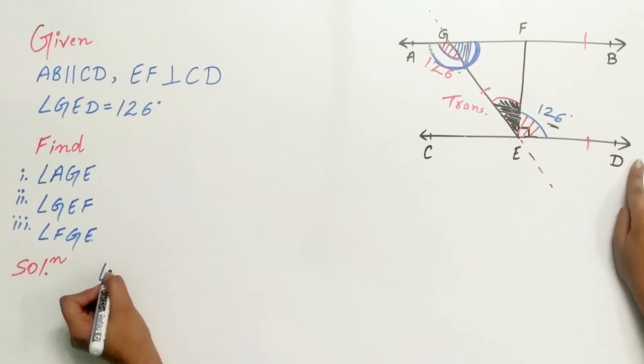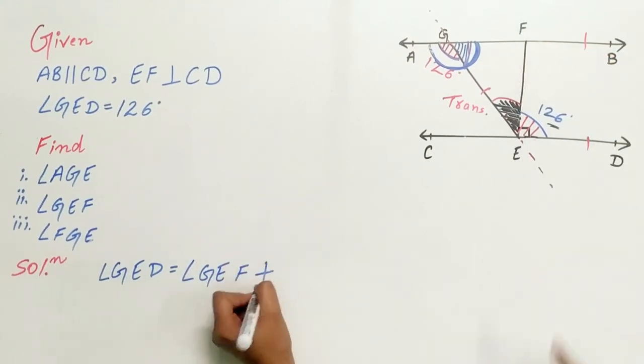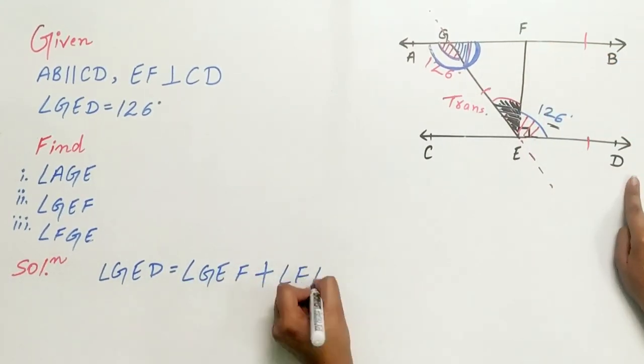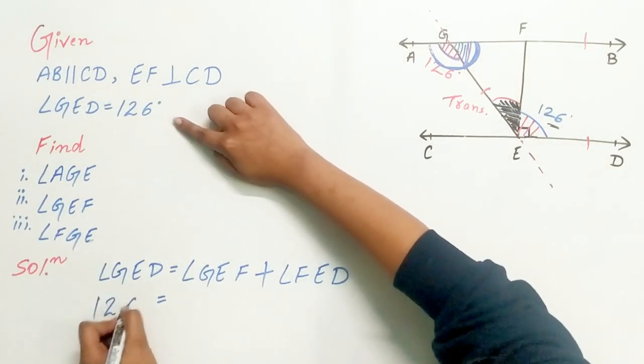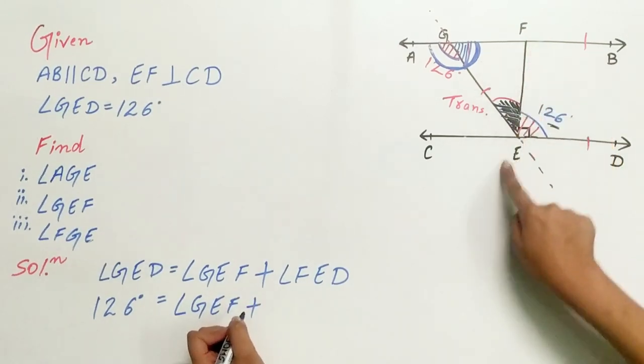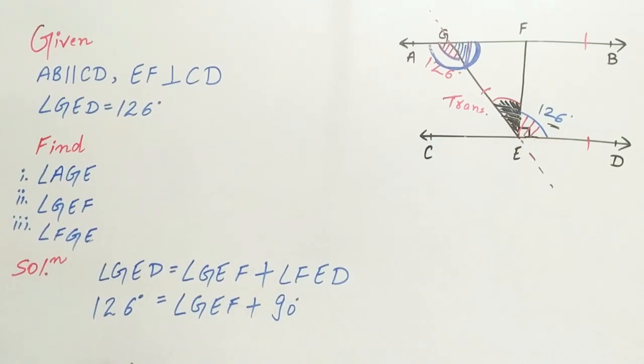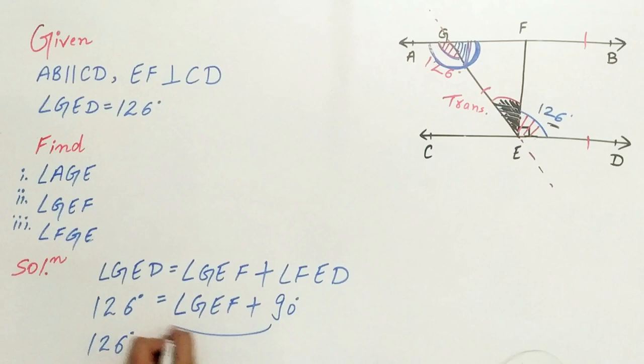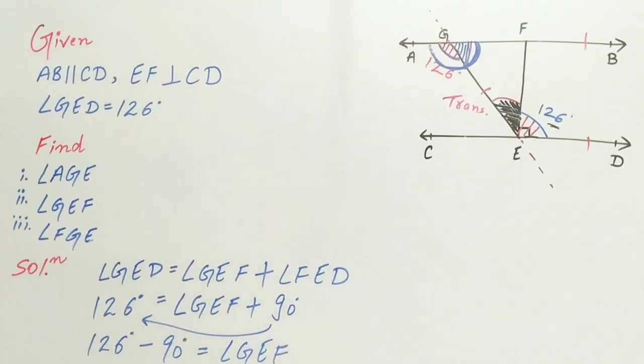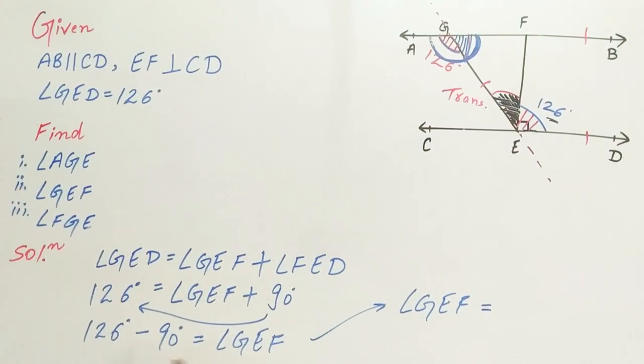Angle GED equals angle GEF plus angle FED. Angle GED is 126 degrees, and angle FED is 90 degrees given. So angle GEF equals 126 degrees minus 90 degrees, which is 36 degrees. Exactly.